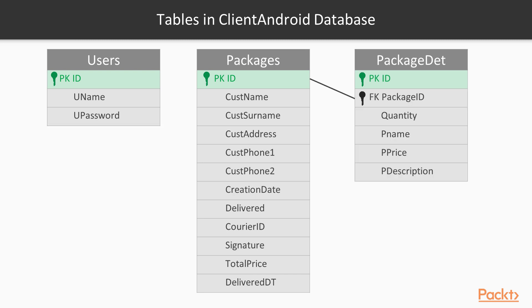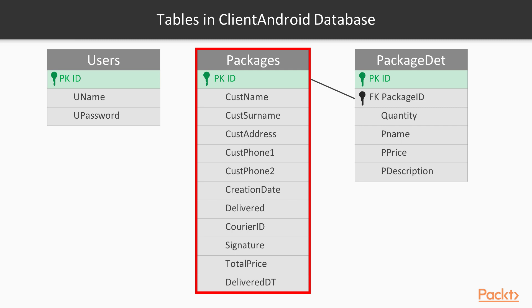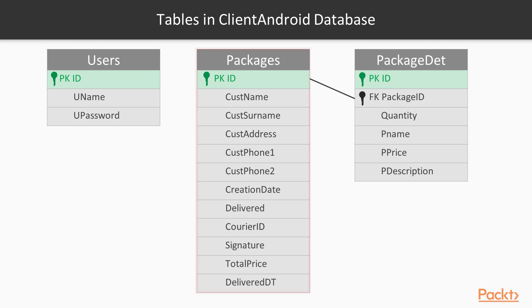The fields in the tables in the Client Android database are as follows. For the table user we will have ID, username, and password. For the table package we will have: ID, customer name, customer surname, address, phone 1, phone 2, creation date, is it delivered, signature of customer, total price, and date time when it is delivered. We will also have a package details table with: ID, package ID, quantity, package name, package price, and package description.